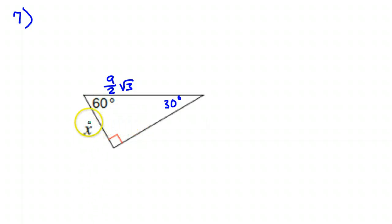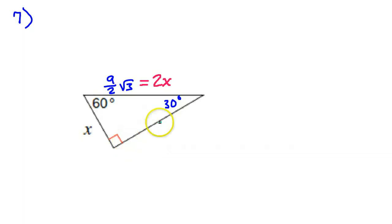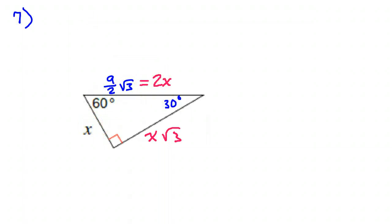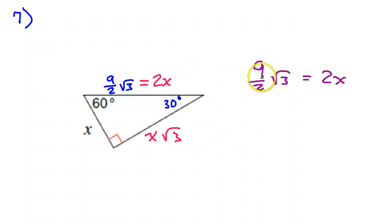Now we need to focus on the bottom triangle — I'll cover up the top for a second. We just found this nine over two radical three, but this is the hypotenuse of this lower triangle — not the long leg, even though it has a radical three on it. The pattern is X for the short leg, two X for the hypotenuse, and X radical three for the long leg. So the equation I just created is: nine over two radical three equals two X.